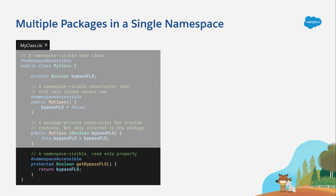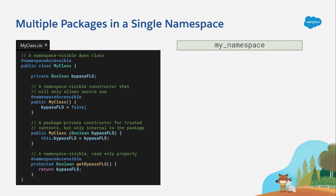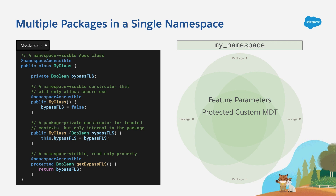And unlike Global Apex, we can add or remove the @namespaceAccessible annotation at any time, even after a package has gone from beta to released. I hope you're starting to see how this could open up a whole new world of packaging possibilities. But it gets even better, because more than just Apex can be used across these same namespace package boundaries. For example, feature parameters defined in one package can be accessed by other packages in the same namespace. The same goes for protected custom metadata types, custom metadata records, named credentials, and of course, Apex. All of these capabilities let you approach the architecture of your package in entirely new ways.